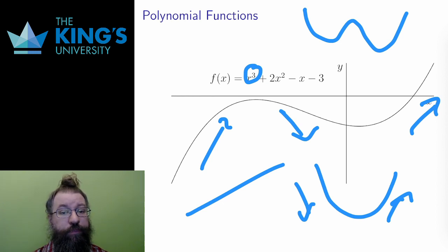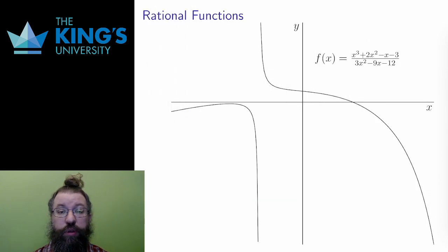Moving on, a rational function is the ratio of two polynomials, one divided by the other. In the diagram, I've drawn the ratio x cubed plus 2x squared minus x minus 3 divided by 3x squared minus 9x minus 12.